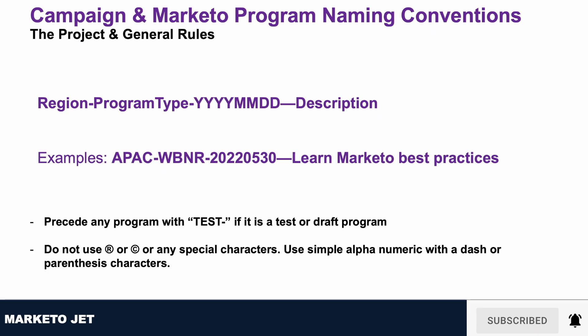Here I recommend using a naming convention that starts with the region, followed by the program type, then the year, month, and date, and finally a short program description. This short program description should not have more than five words to describe what the program is all about.